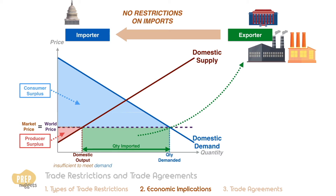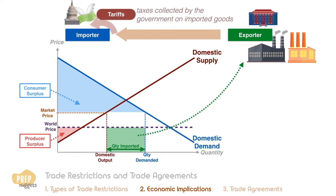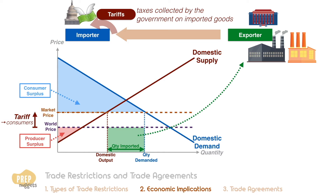However, if the government imposes a tariff on the good, this tariff is most likely passed on to consumers, so the market price rises by the tariff amount. At this higher price, domestic producers want to supply more, so domestic output increases. The demand by consumers is lower, so the amount of imports is reduced.